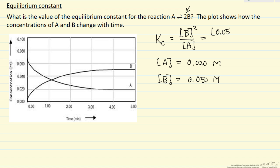0.05 squared over 0.02 gives us the equilibrium constant.